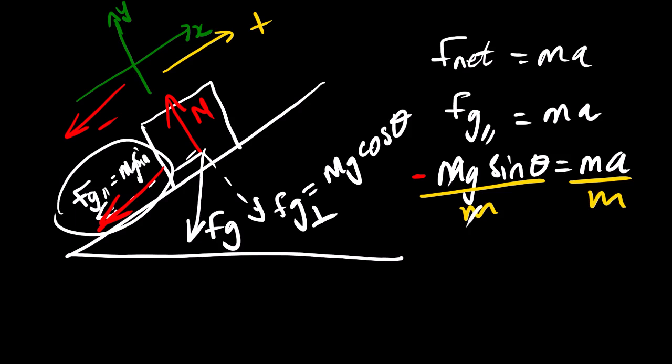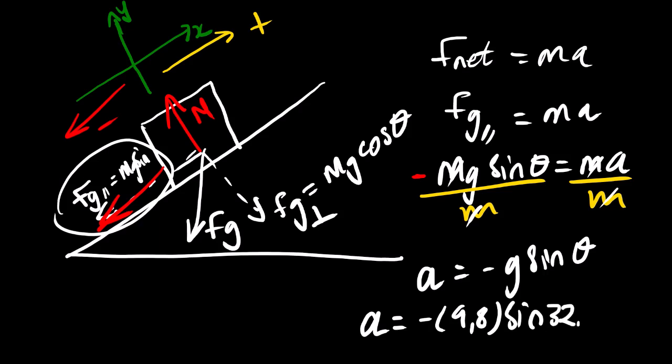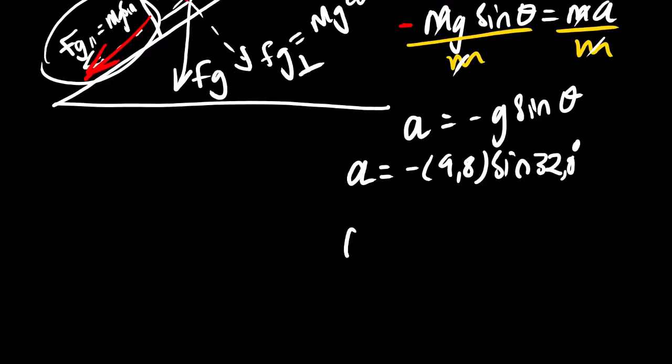Then from here we can see that we have masses on both sides. So we can divide both sides by M. Then this will get rid of this, this will also get rid of this. So A is equal to negative G sine theta. Then from here we can get our deceleration by substituting sine 32.0 degrees. Our deceleration is negative 5.193 meters per second squared.